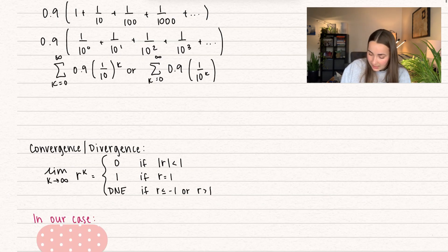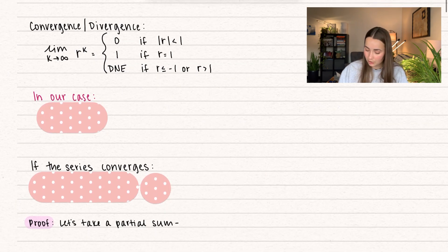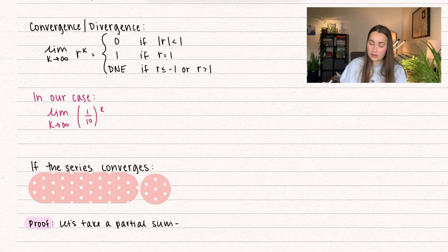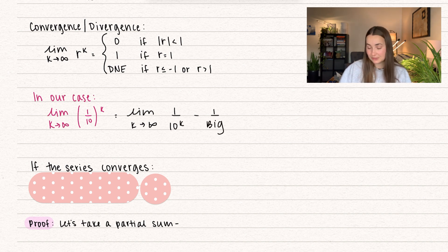So in our case, we have that the common ratio is equal to 1 over 10, which is less than 1, which tells us it's going to converge. Now we're going to actually take the limit to show that. That is equal to the limit as k goes to infinity of 1 over 10 to the power of k, which is going to be 1 over a really big number as k goes to infinity, which is going to go to 0.